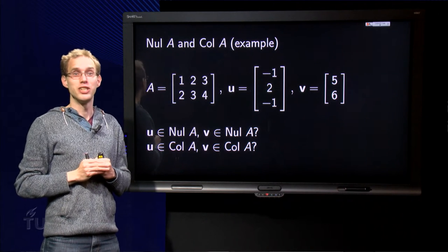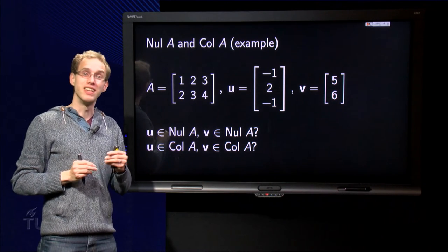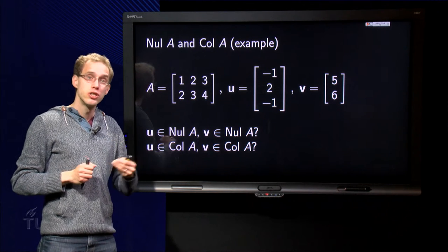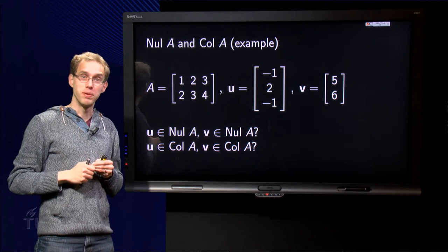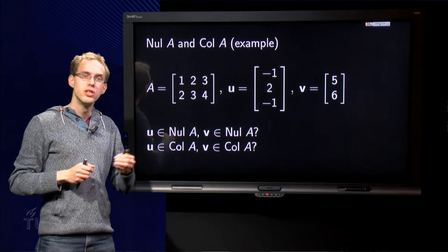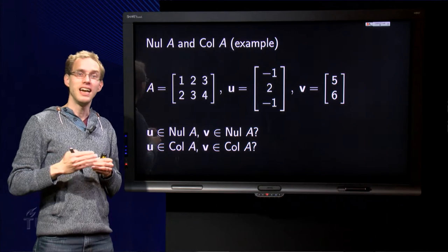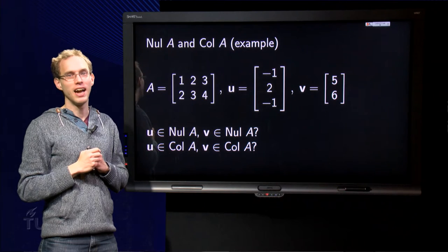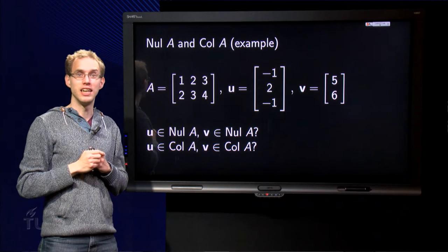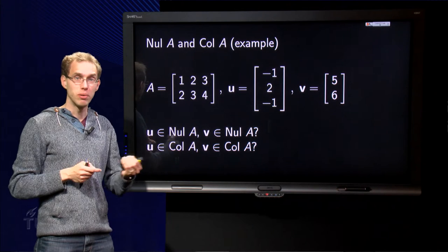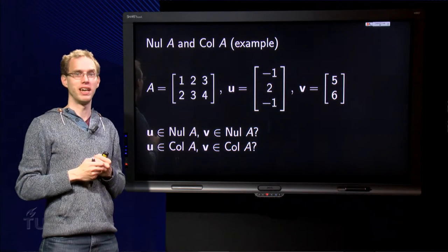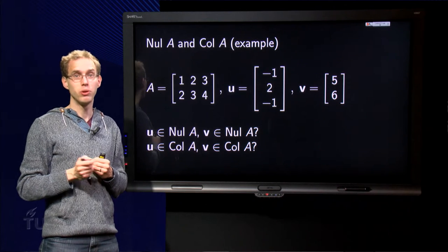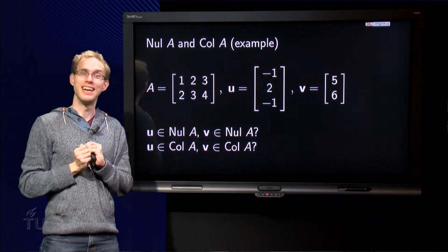A subspace of R^n is a subset of R^n which satisfies some properties. So the obvious question regarding a subspace H would be: suppose I have some vector, is this vector in the subspace or not? Let us try to answer this question in the case of subspaces we have encountered: the column space of A and the null space of A. Given a vector, how can we find out that this vector is in Col A or Nul A? Let us look into that in this video.